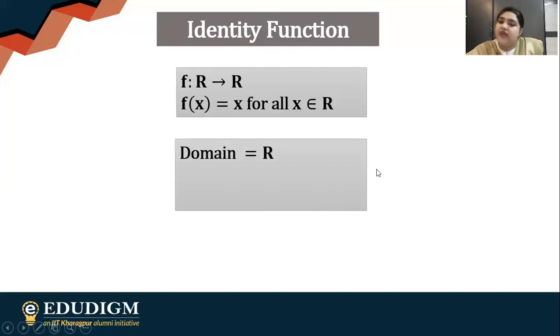So the domain is R. The range will also be R here because if you're giving one as the input, you're getting one. You give any real value as the input, you're getting the same output. So it should cover the entire R. And the co-domain is R as well.